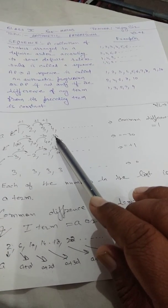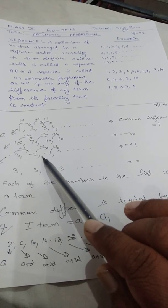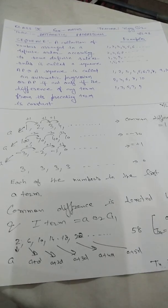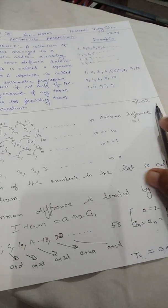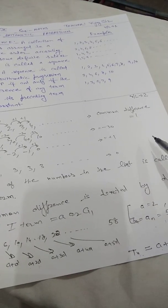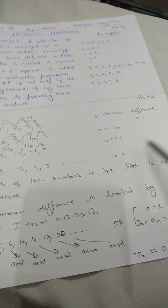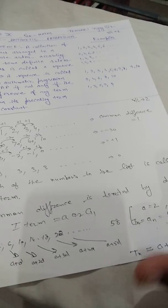The common difference is denoted by small d. So in the first example, d equals positive 1; next, d equals minus 30; next, d equals plus 1; next, d equals 0. The common difference can take any real values — it may be 0, negative, positive, rational, or irrational.